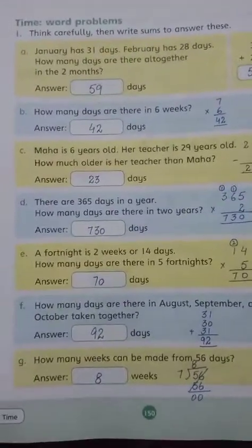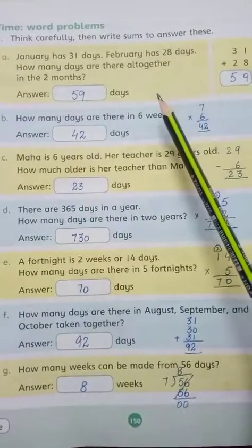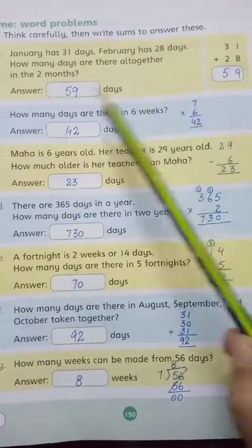Now take out your countdown books and open to page number 150. Today we learned time word problems. Think carefully, then write sums to answer these. Now we have sums to answer them. We have to solve them.